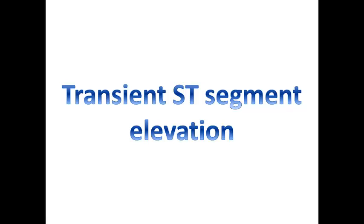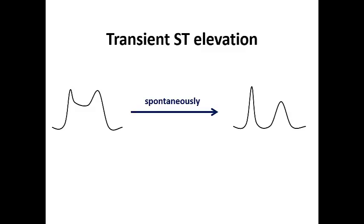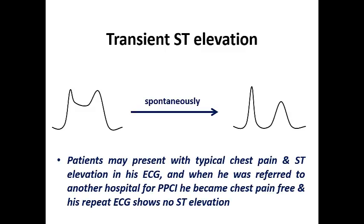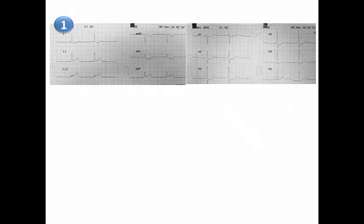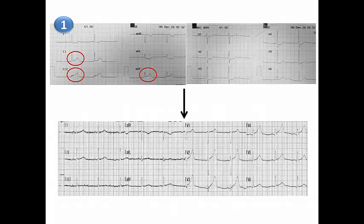Transient ST elevation is considered part of the abnormal ECG features in non-ST because it is not considered STEMI — it is just transient. Transient ST elevation means the ST segment resolves spontaneously, returning completely to the isoelectric line with complete resolution of chest pain. For example, a patient presents with chest pain and ST elevation, is referred for primary PCI, becomes pain-free, and repeat ECG shows no ST elevation — usually diagnosed when the patient is transferred.